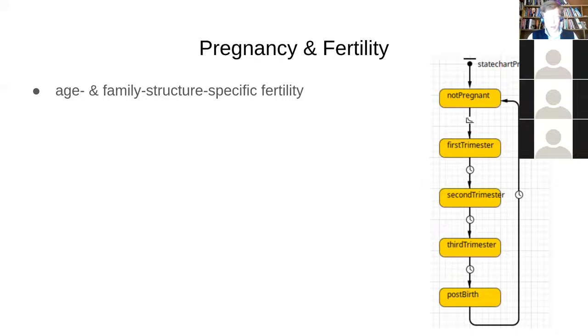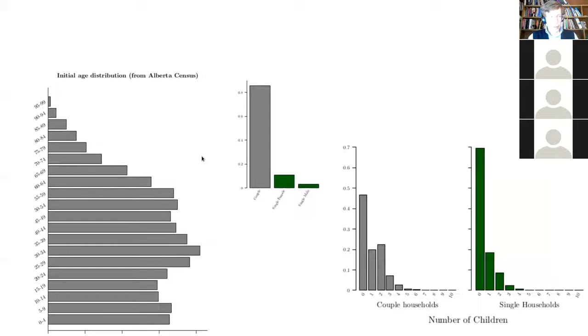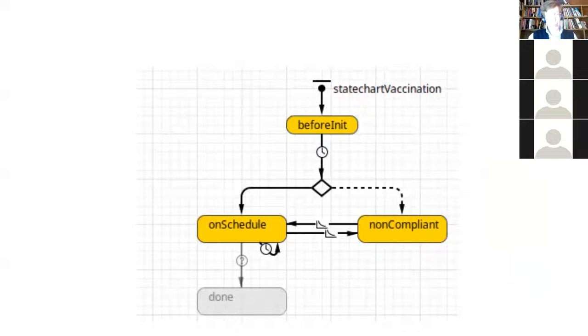So they could become a parent at some time, and of course, in their parenthood, they're still inheriting whatever vaccines they received earlier. At some point, they might give birth, and we had a lot of attention to fertility and so on. Because this focused on maternal immunization, we needed to represent reproduction in a little bit greater detail.